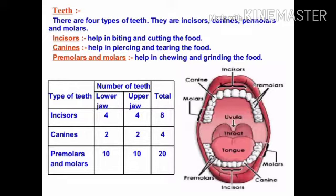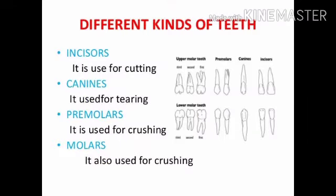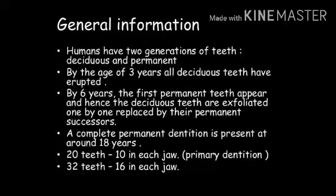Incisors help in biting and cutting the food. Canines help in piercing and tearing the food. Premolars and molars help in chewing and grinding the food. There are eight incisors — the flat teeth shaped for cutting and biting. In each jaw there are two canines, pointed for tearing food. There are four premolars, two on each side of each jaw. Molars are the last three teeth on both sides in both jaws.